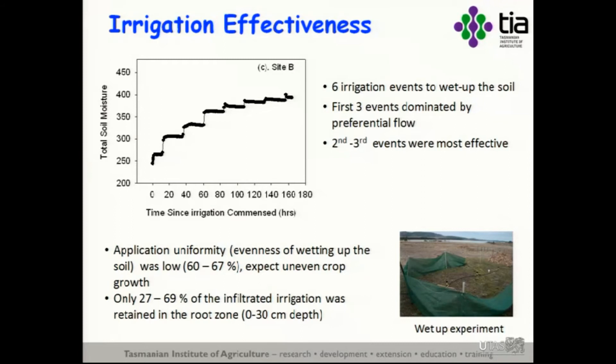Each of these kits represents an irrigation event. Due to water repellency, it can take up to six irrigation events before you actually fill the soil profile — even though you're supplying excess water with every event, and every event had runoff, with more water supplied than there was pore space to fill in the soil. They're very difficult to fill, requiring a lot of application. The application uniformity was very low — only around 60 to 70%. Only 27 to 69% of the infiltration was actually retained in the root zone.